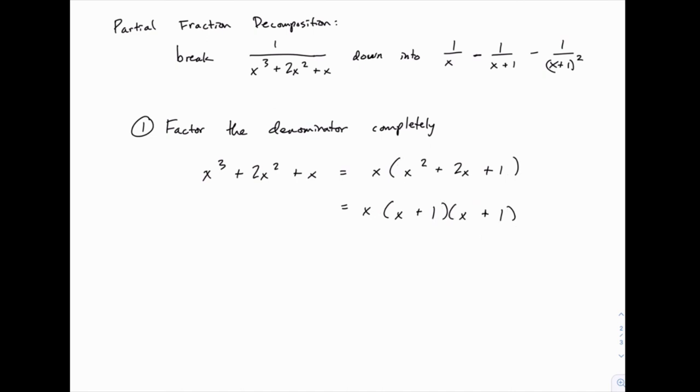So if you're ever totally stuck on factoring a quadratic, you can always back your way into the answer by using the quadratic formula. We can also write this as just x(x+1)², and that's going to be helpful for us going forward. So the next two steps are going to use this factored form and go on from here. But the first step in partial fraction decomposition is simply to factor the denominator completely.